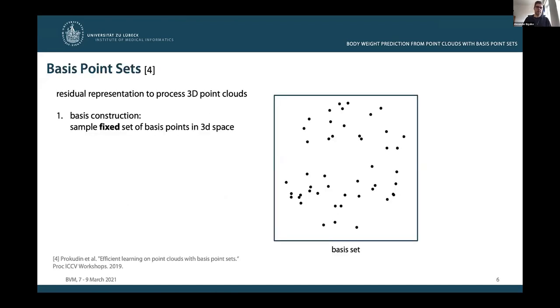The concept of basis point sets has been introduced by Prokudin et al., and its practical usage can be broken down into two main steps. First, we need to construct a basis by sampling a fixed set of basis points in three-dimensional space. It is very important to emphasize that this set of points is now fixed for all inputs from both training and testing data.